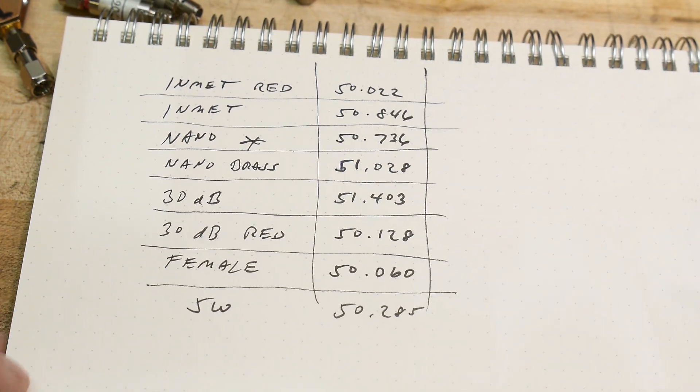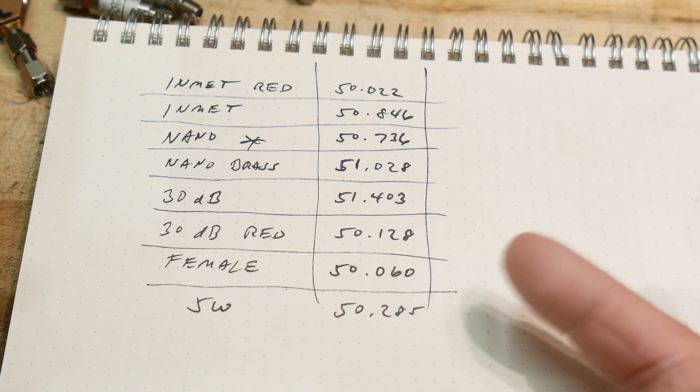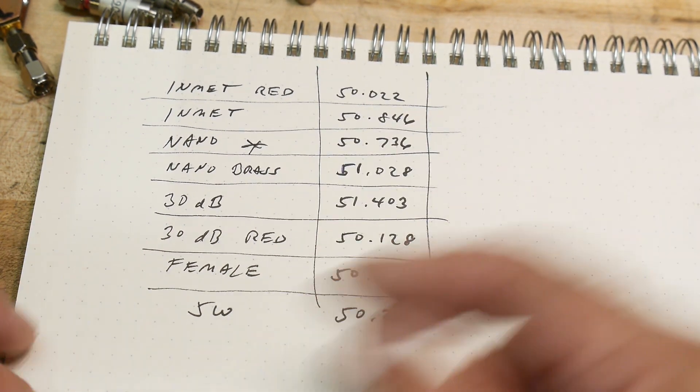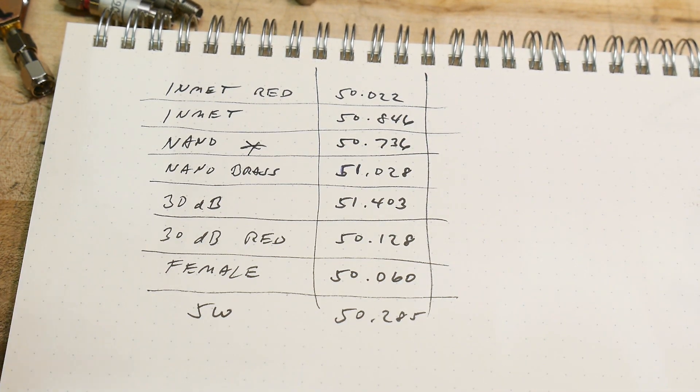Actually they don't get any better or worse when you sweep them for frequency. It is kind of what it is. So if you measure them at DC, that's kind of how good they're going to be everywhere.